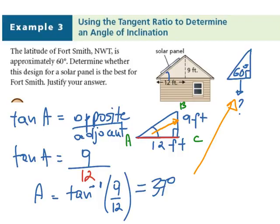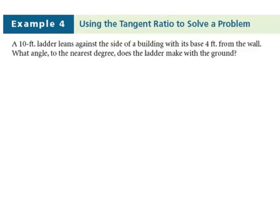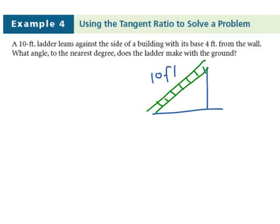Let's take a look at one more question. A 10-foot ladder leans against the side of a building, with its base 4 feet from the wall. What angle, to the nearest degree, does the ladder make with the ground? So, let's draw a picture of our ladder. We know that the length of the ladder is 10 feet. We know that it makes a right angle triangle with the wall, which is usually 90 degrees. And the base of the ladder is 4 feet from the wall.